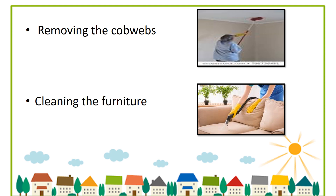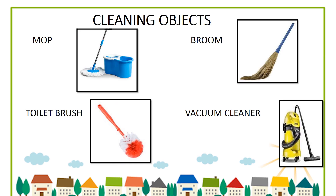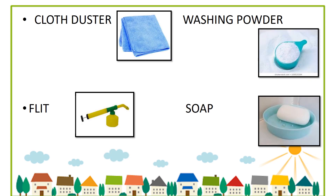Cleaning the furniture — children, we use furniture regularly. Dust settles on the floor and furniture. When we sit on it, it sticks to our body and clothes and we feel uncomfortable. We use many cleaning objects to clean our home, like broom, mop, toilet brush, and vacuum cleaner. We use a cloth duster to dust the furniture, doors, and windows.